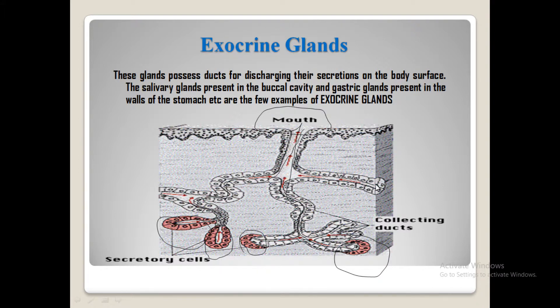So, what is the exocrine system? It is the gland system in which secretions travel through ducts to reach the target cell and the target place.